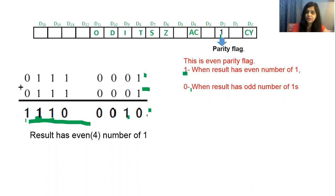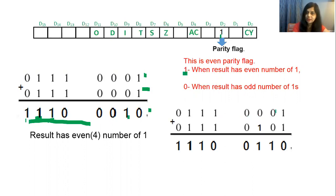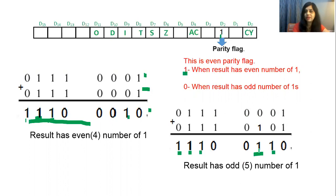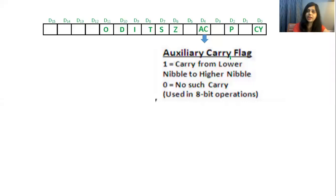If the result holds an odd number of 1s — for example, counting the 1s in the result gives 1, 2, 3, 4, and 5 — there are five 1s, which is odd. Whenever there are odd number of 1s, the parity flag will reset to 0. So parity flag is an even parity flag: when result holds even number of 1s, parity flag sets to 1; when result has odd number of 1s, parity flag resets to 0.